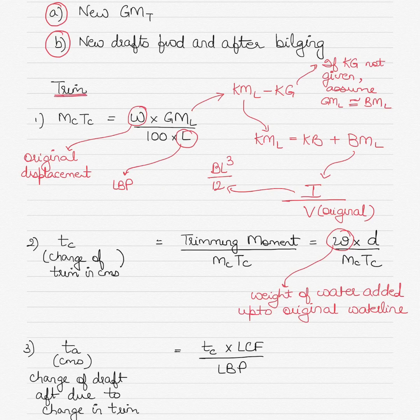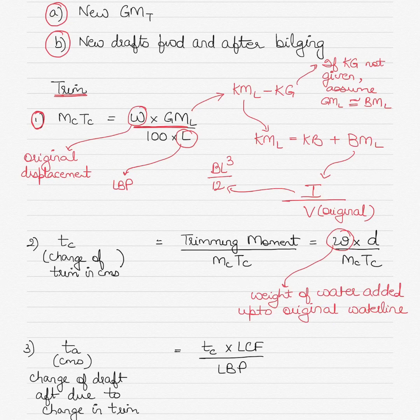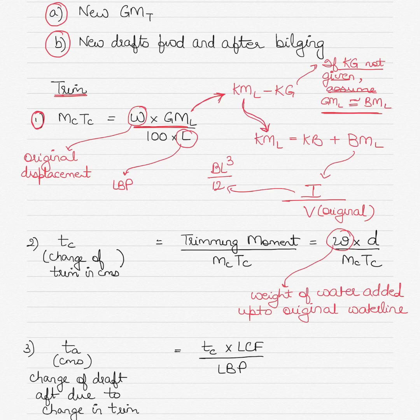For trim calculations — which also means new drafts forward and aft after bilging — one of the first formulas we use is: MCTC equals displacement (the original displacement) multiplied by longitudinal GM, divided by 100 times the length between perpendiculars. The longitudinal GM can be found by subtracting KG from the longitudinal KM. If KG is not given, assume that your longitudinal GM equals your longitudinal BM. The longitudinal KM can be found by adding KB plus longitudinal BM.